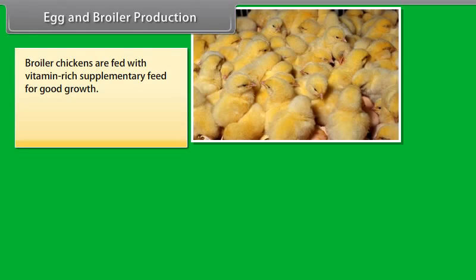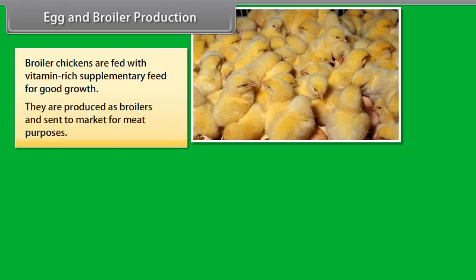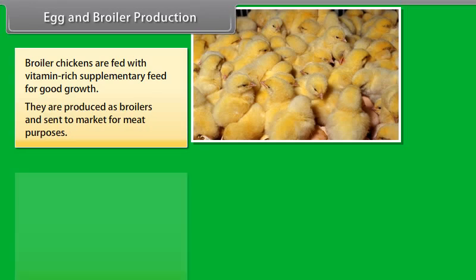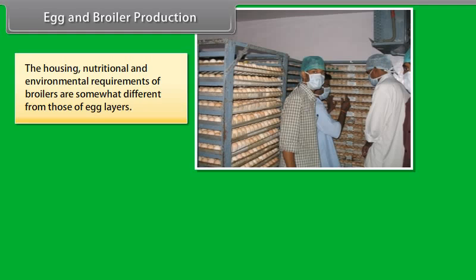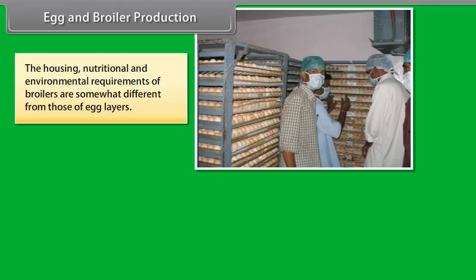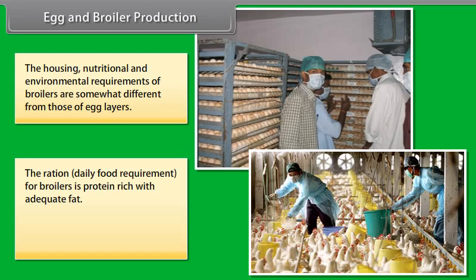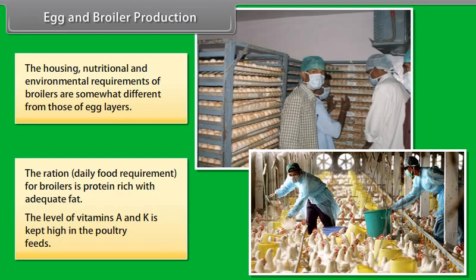Broiler chickens are fed with vitamin-rich supplementary feed for good growth. They are produced as broilers and sent to market for meat purposes. For good production of poultry birds, good management practices include maintenance of temperature and hygienic conditions in housing and poultry feed, as well as prevention and control of diseases and pests. The housing, nutritional and environmental requirements of broilers are somewhat different from those of egg-layers. The ration for broilers is protein-rich with adequate fat, and the level of vitamins A and K is kept high in the poultry feeds.